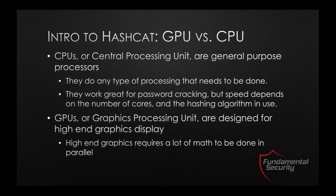Hashcat does two types of cracking: CPU-based and GPU-based. A CPU is your central processing unit — a general-purpose processor that does the vast majority of processing on your computer daily. It works great for password cracking, but speed depends on the number of cores available and the hashing algorithm in use. Because a CPU tends to have fewer cores, it may not process as fast as a GPU when it comes to password cracking.